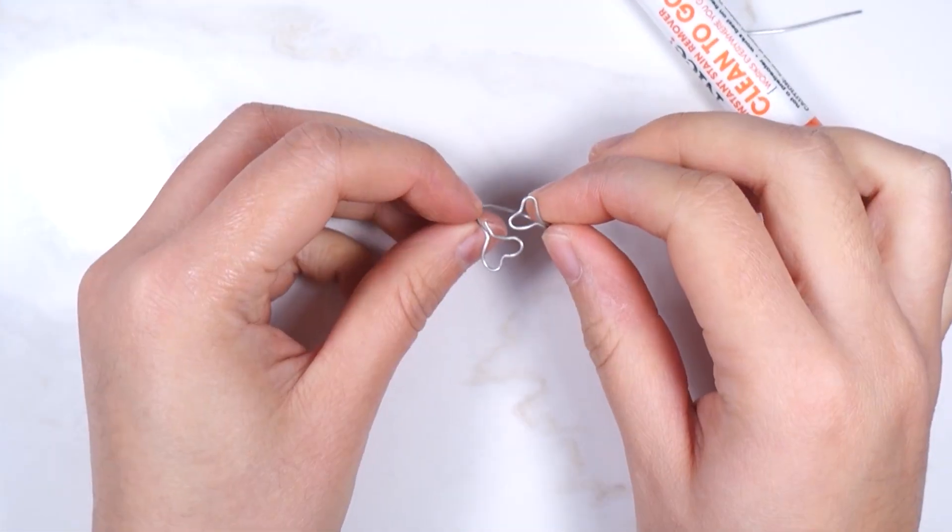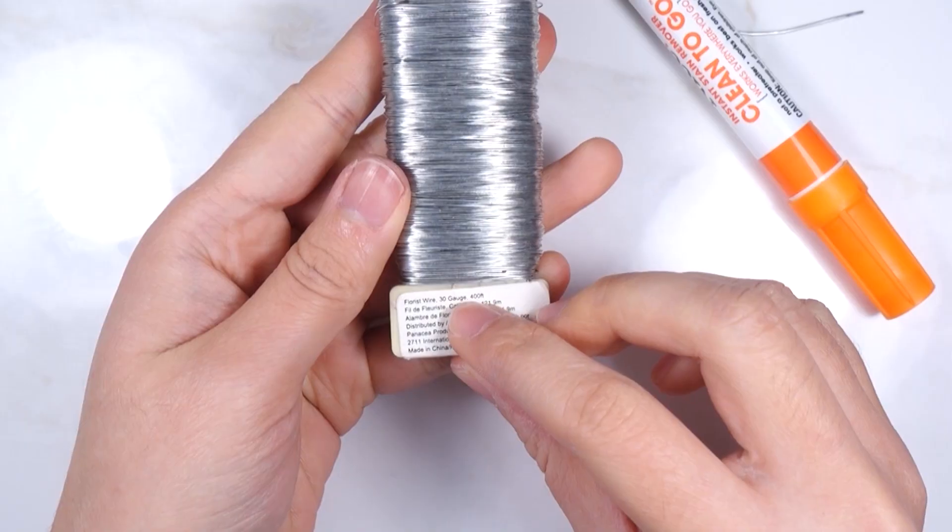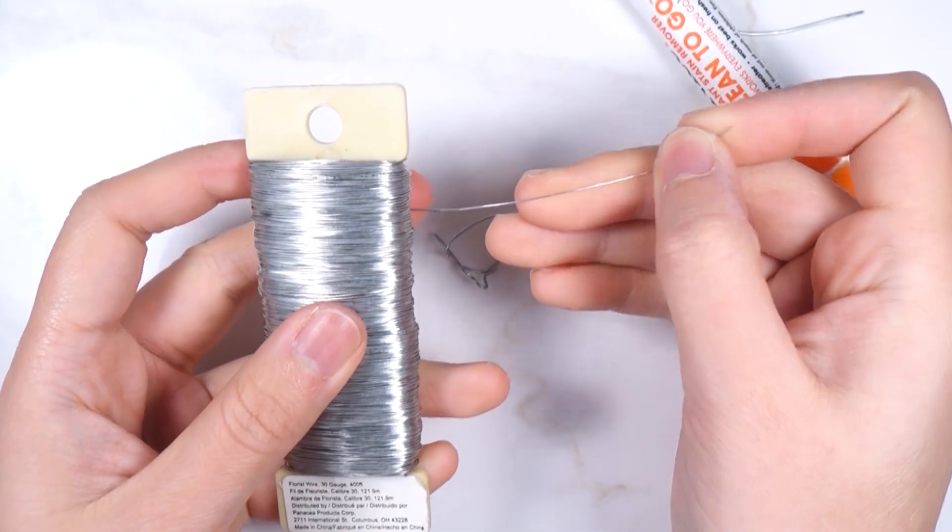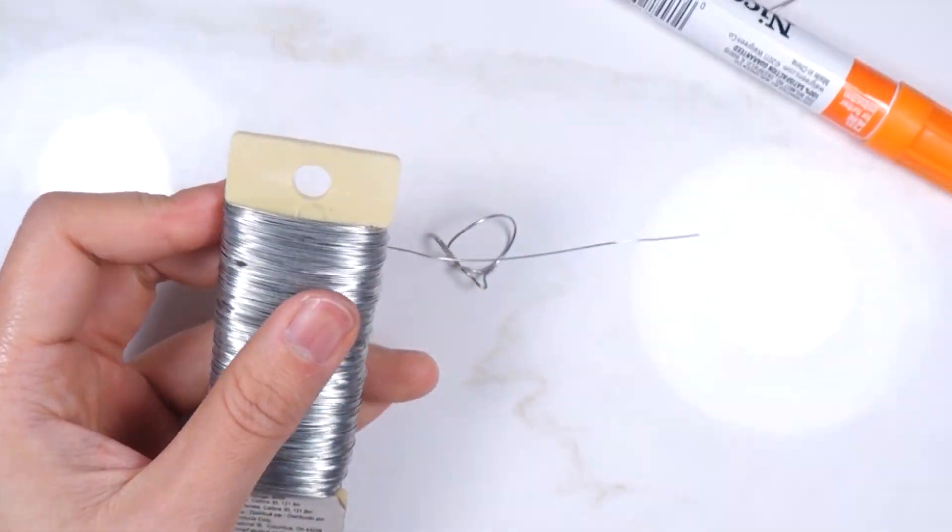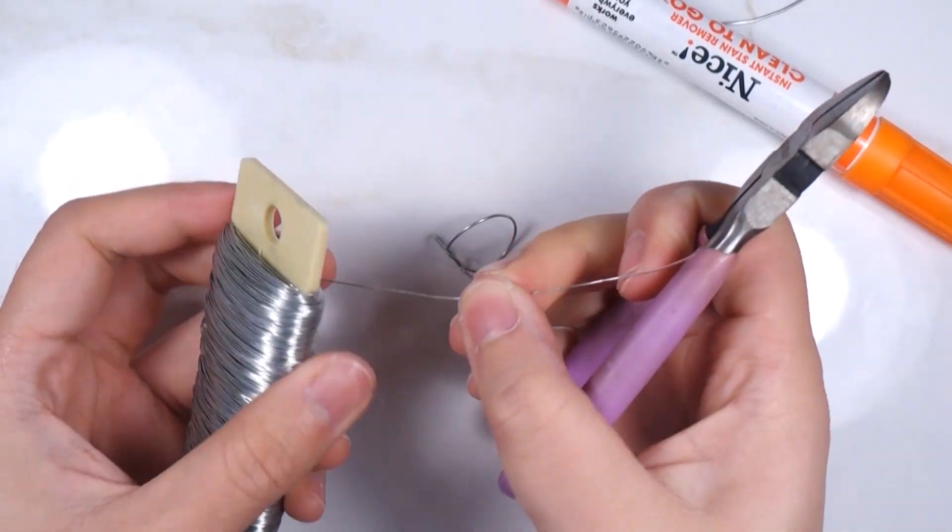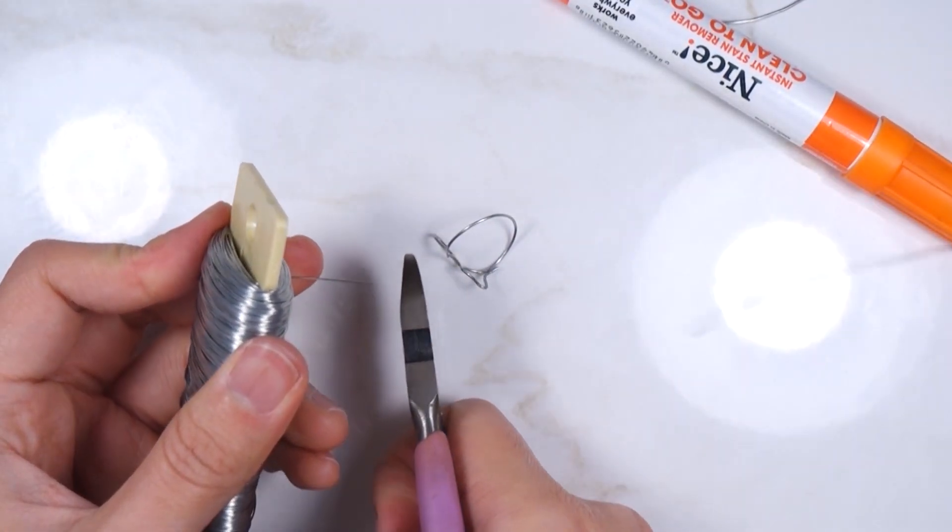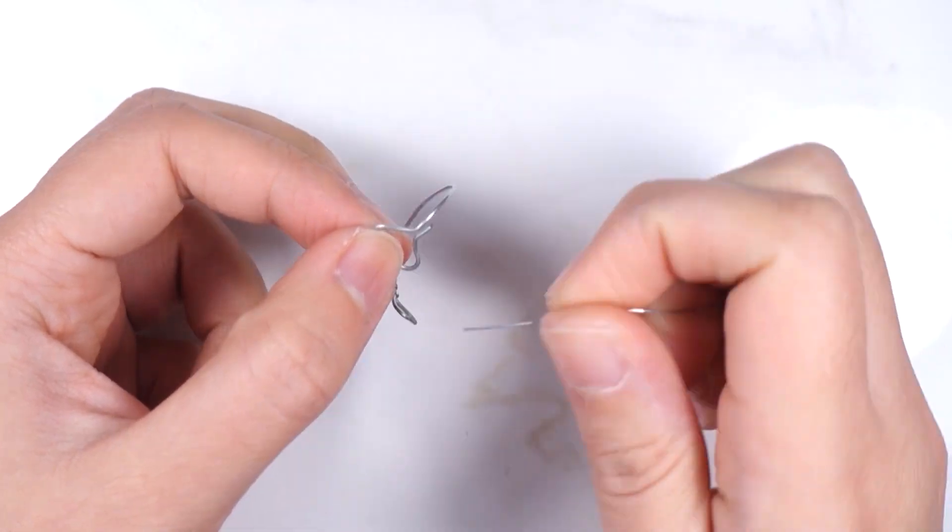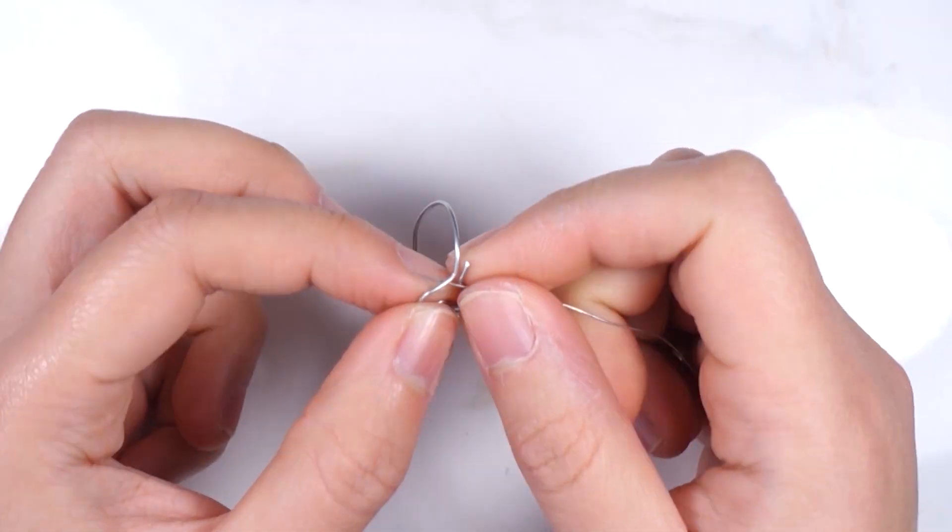You can leave it like this if you want, but I'm going to close the gap with a thinner wire. I'm using 30 gauge wire and cut two that are about 3 inches long. Then wrap it around the gap area.